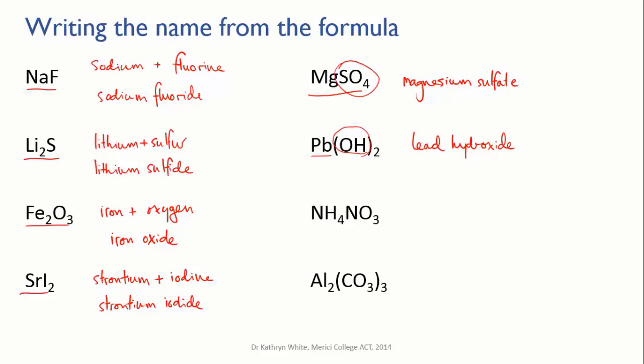This one, NH4NO3, is a bit trickier. If you're familiar with polyatomic ions, you'll notice the cation is ammonium, one of the few cations that's not metal-based. The anion is nitrate. So that's ammonium nitrate, one of the most common fertilizers and explosive bases in the world.